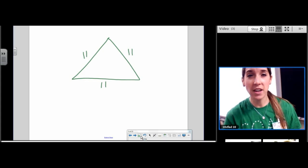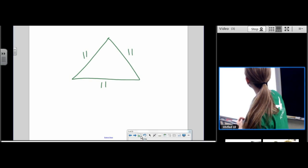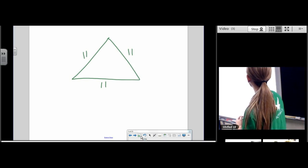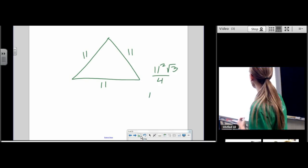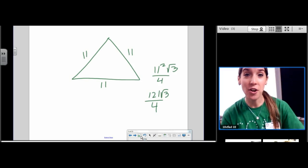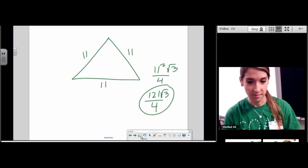If you know that formula, you're going to be way faster than everyone else. Side squared, square root 3 over 4. 121 root 3 over 4. I'm done with the problem. And I didn't even draw a height. Make sense?